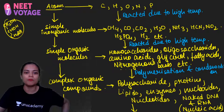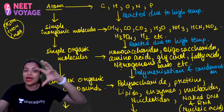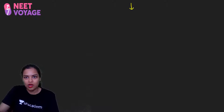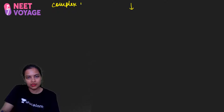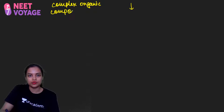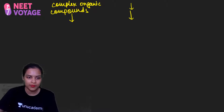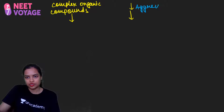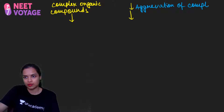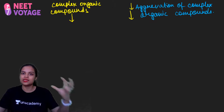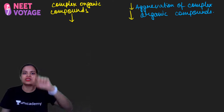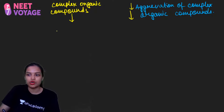Now, what happened next? These complex organic compounds started to aggregate and clump together. There was nothing but aggregation of complex organic compounds — proteins, amino acids, lipids, enzymes all coming together in one place. When this aggregate was covered by a water film or membrane that surrounded it, you got what are called protobionts, also known as primitive cells.